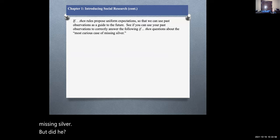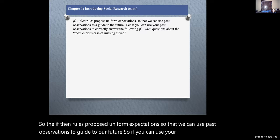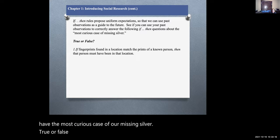The if-then rules propose uniform expectations so that we can use past observations to guide our future. If you can use your past observations to correctly answer the question, if this, then that, then we have the most curious case of our missing silver.